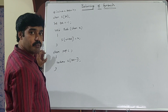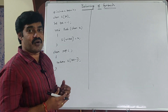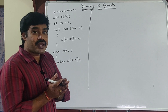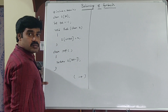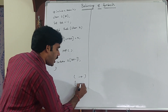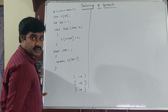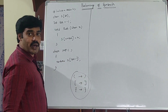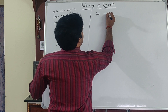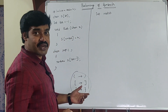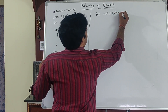Before writing the main function, I need to write a function to check whether the symbols are matched or not. Every left parenthesis should have a matching right parenthesis, every left bracket should have a corresponding closing bracket, and every left brace should have a corresponding right brace. The function name is 'match', with return type integer, taking two character parameters.